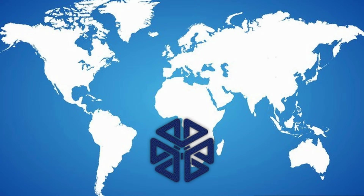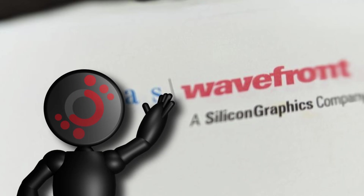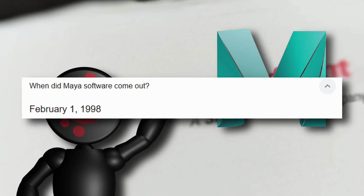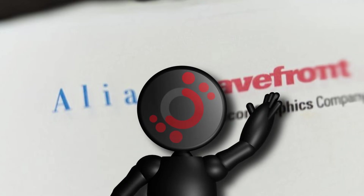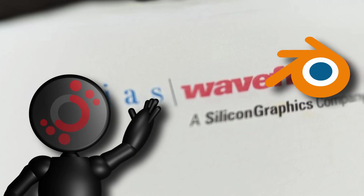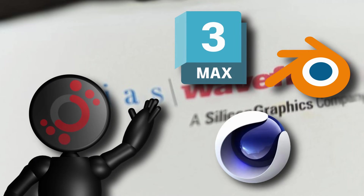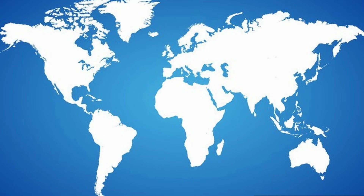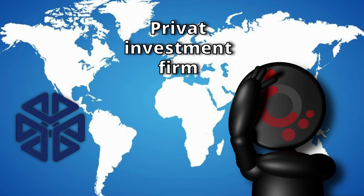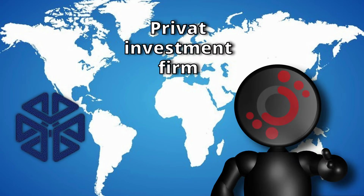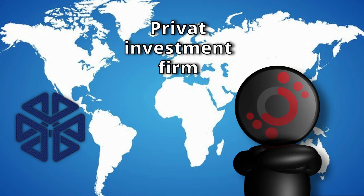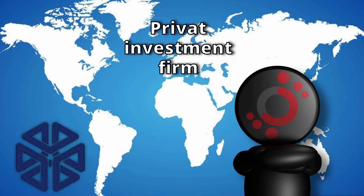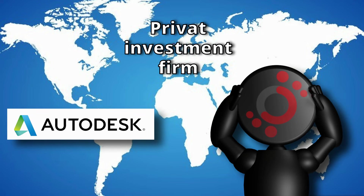Silicon Graphics then made Alias and Wavefront fuse together, and they released Maya in 1998. But over the years, as more 3D softwares came out — like Blender, 3D Max, and Cinema 4D — and cheaper computer hardware became available, Silicon Graphics was facing huge financial trouble. So they had only one choice left: sell off Alias and Wavefront to a private investment firm. But Autodesk, their biggest competitor, ended up buying Maya from them in 2006.